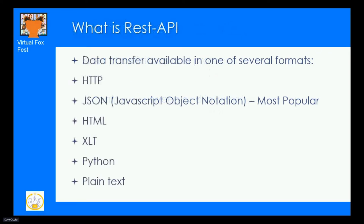REST API allows us to send data between the main data source and the client application. Data transfer is available in several formats: HTTP, which has been around a long time; JSON, which is now the most popular; HTML; XSLT; Python; or plain text. We'll see a couple of examples of plain text API calls further into the presentation.